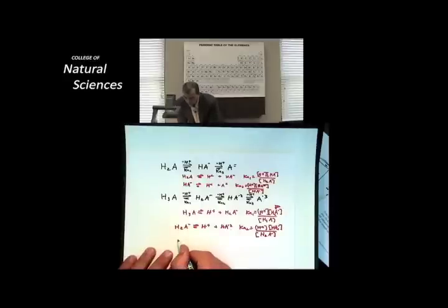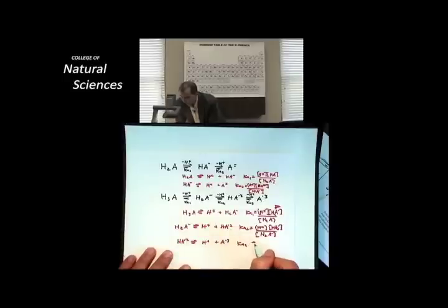And here's HA2-, going on to form H+, and the fully deprotonated version here. KA3 is equal to H+ times A3- over HA2-.